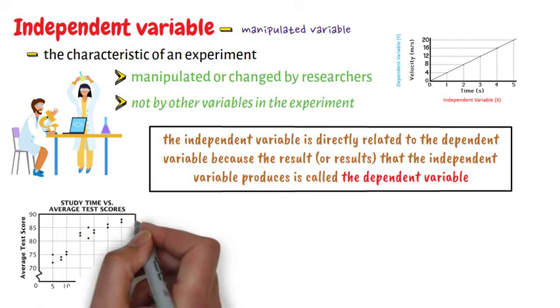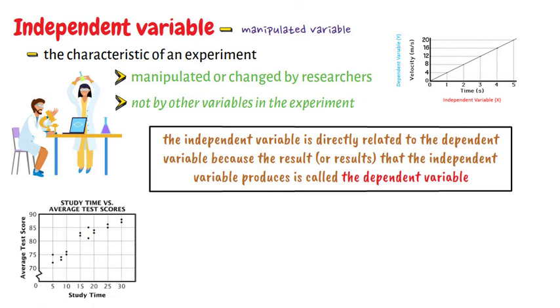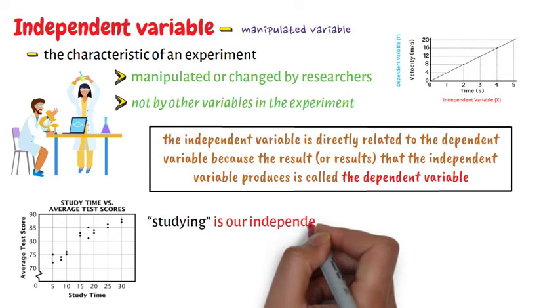For example, in an experiment that looks at the effects of studying on test scores, studying is our independent variable.